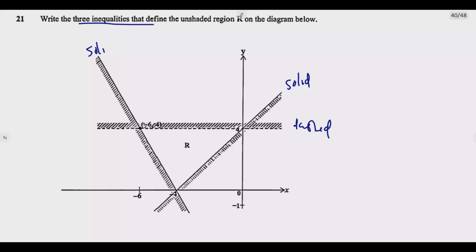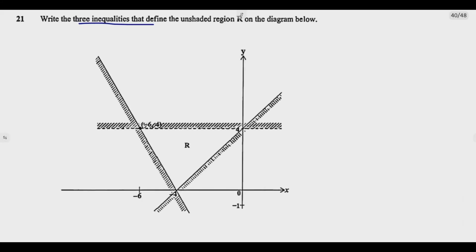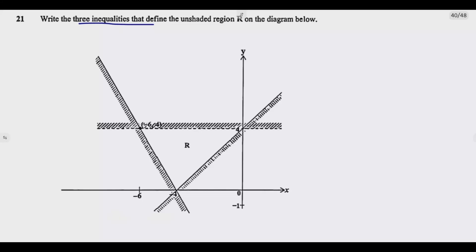Let us start with the simplest. One of the marks is always the simplest — if you notice, the marks are five: one mark, then two, two. The simplest will always be either a vertical or horizontal line. We've got a horizontal line here. A horizontal line means regardless of the value of x, the value of y remains the same. So this line is y = 4.